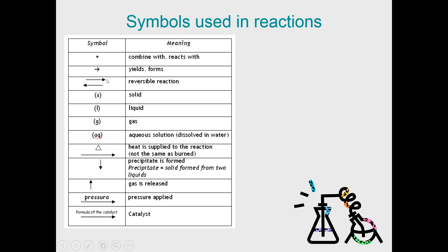A triangle above the arrow means heat is supplied to the reaction — this doesn't mean the same thing as combustion. Combustion is burning, but heat supplied specifically means you're heating something with a hot plate or Bunsen burner, in which case you'd place this triangle above the arrow.